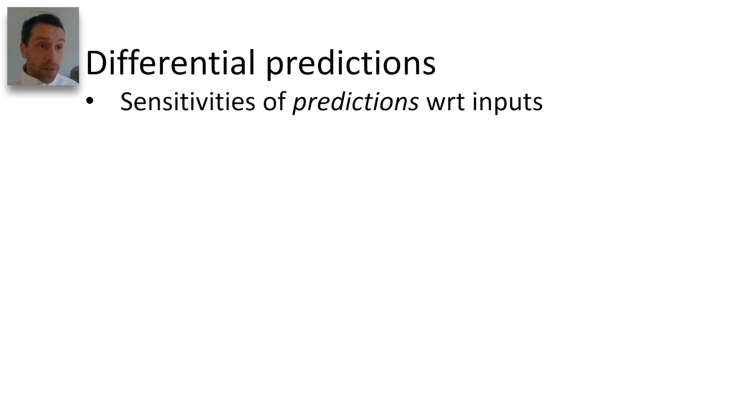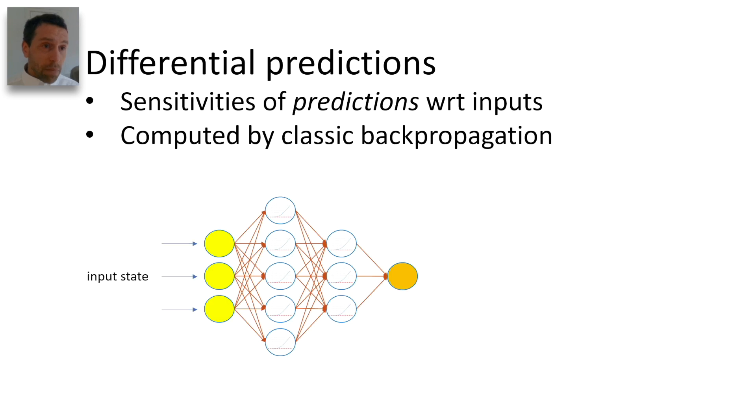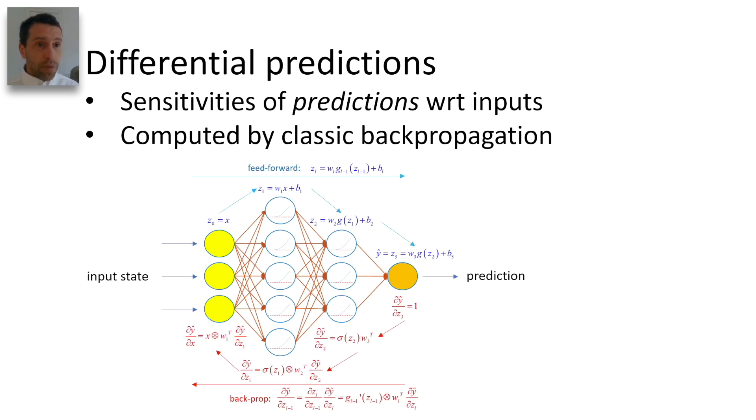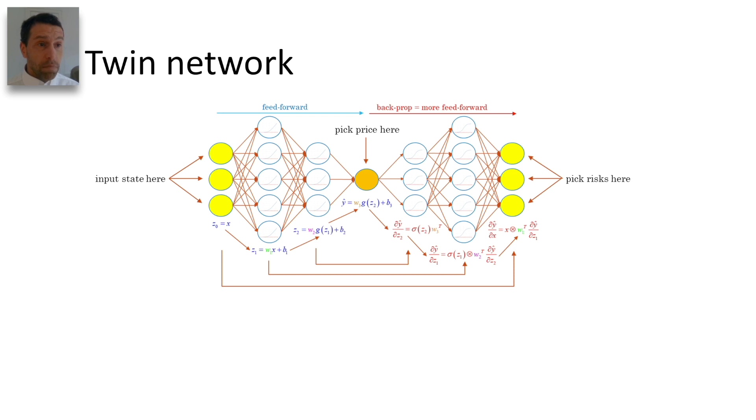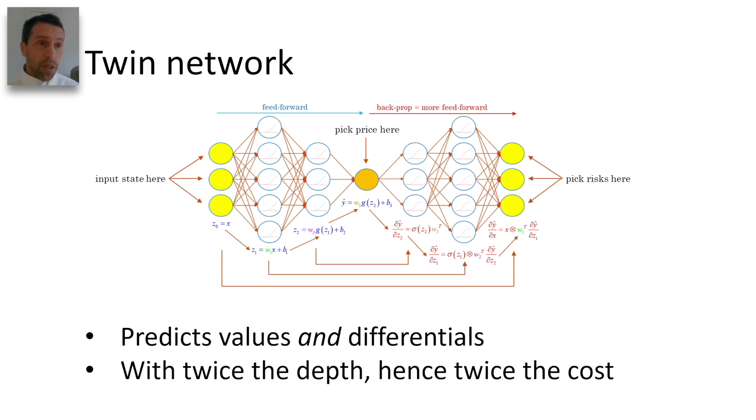Differential predictions are sensitivities of value predictions with respect to inputs, and they are computed by classic backpropagation. In other terms, we traverse a twin network, first with feedforward inference, then backprop, to predict a value and all its sensitivities for twice the cost of value alone.